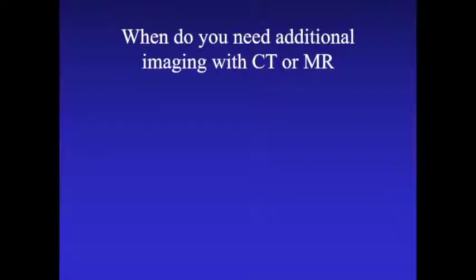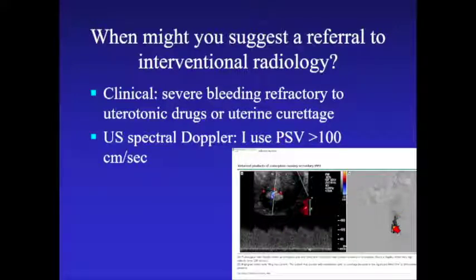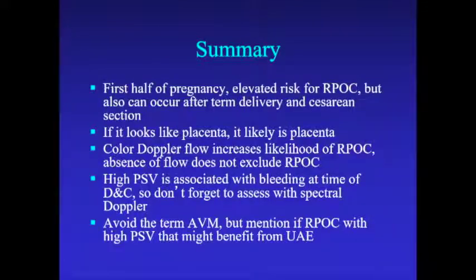When do you need CT or MRI? Basically never. I am showing one angiography case where we had high peak systolic velocity — you can see an early draining vein. These are the patients who might benefit from embolization prior to treatment. In summary: elevated risk for retained products in the first half of pregnancy, but it can also occur after term delivery and C-section. If it looks like placenta, it probably is. Color Doppler flow increases the likelihood of retained products, but absence of flow does not exclude the diagnosis. High peak systolic velocity is associated with bleeding at the time of D&C — so assess with spectral Doppler. Avoid the term AVM, but mention retained products with high peak systolic velocity that might benefit from uterine artery embolization.